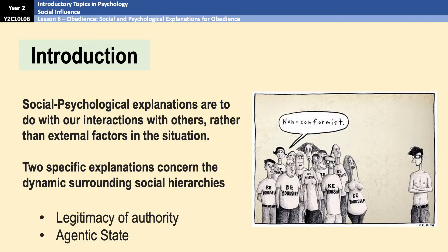Social and psychological explanations are all about our interactions with others, rather than external factors in the situation. In the last video we looked at situational variables — things like uniform, proximity, and location — all of which are external. This video looks at two specific explanations: the legitimacy of authority and the agentic state, both of which look at the dynamics surrounding social hierarchies and how these dynamics can lead to obedience in any given situation.